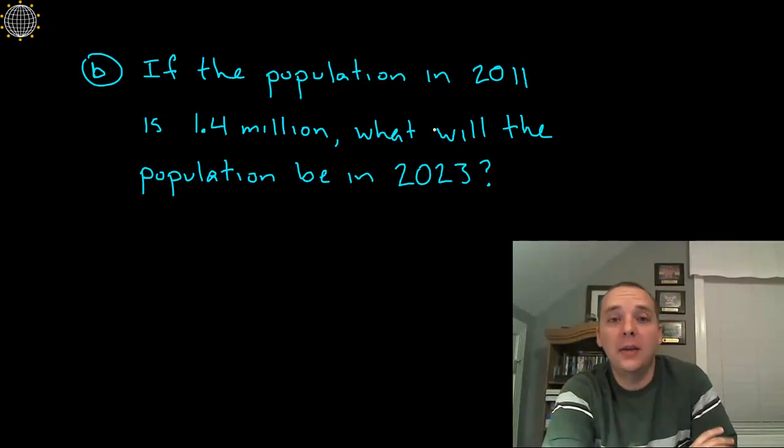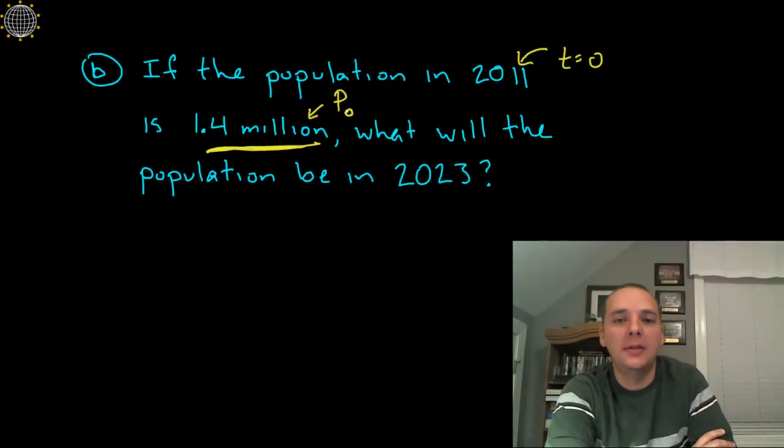Alright, now the main thing we need to remember about this is whenever they give us a starting year, or like an initial census or what not, we're going to equate that with T being 0. We're going to let that be T equals 0. And so this population here will become our P sub 0, that's our initial amount.